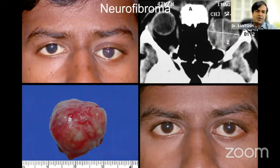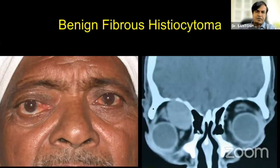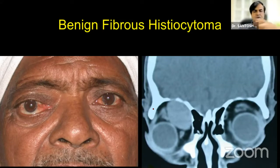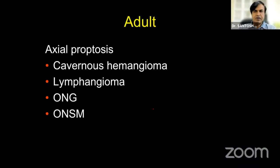This is an example of neurofibroma which is also very well circumscribed. Neurofibroma is relatively rare. This is benign fibrous histiocytoma — clinically or even on CT scan it is impossible to tell a benign fibrous histiocytoma from a neurilemmoma, but MRI characteristics are quite distinct. Benign fibrous histiocytoma can occur anywhere in the orbit whereas neurilemmoma occurs majorly through the supraorbital or intraorbital nerve areas.